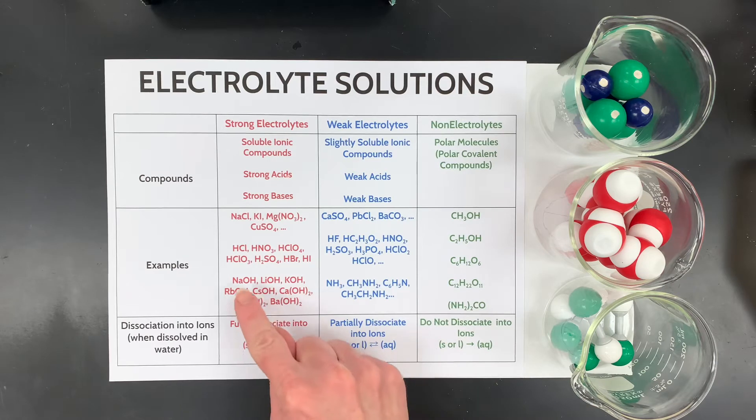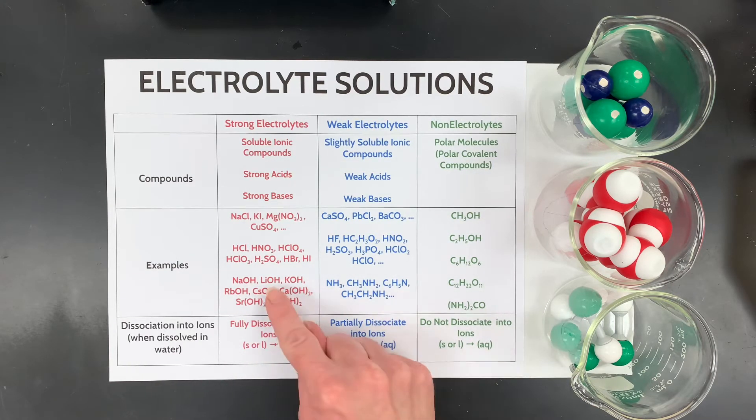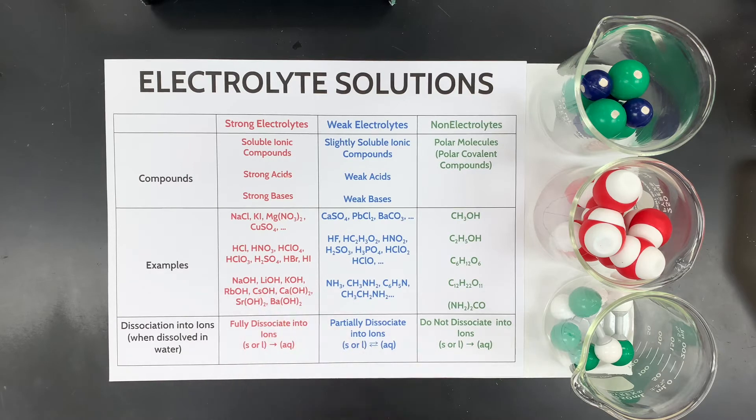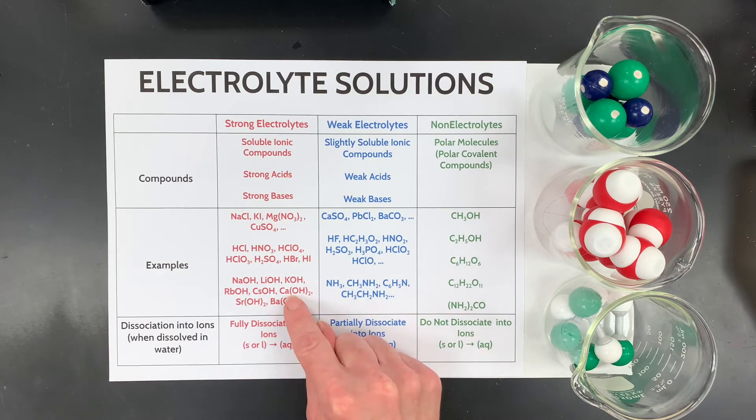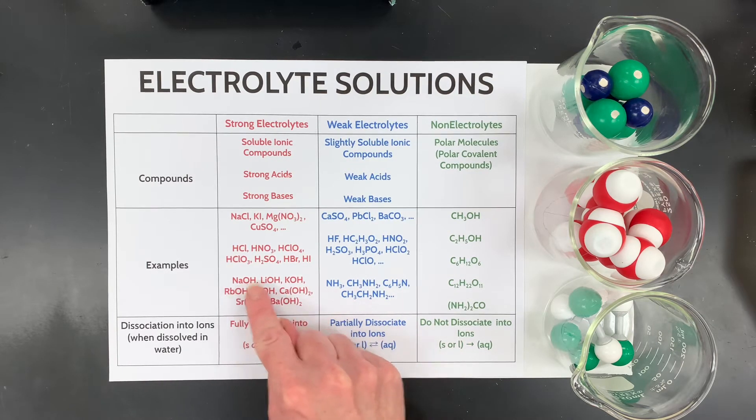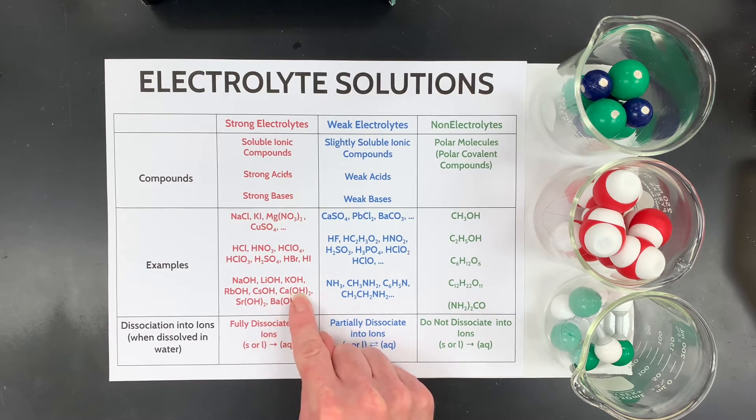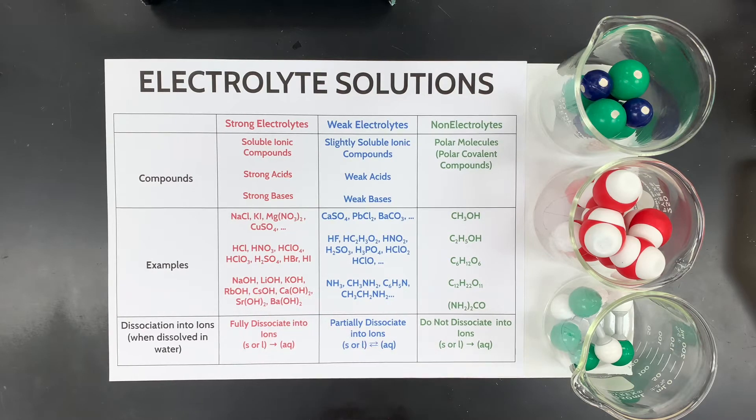All right, next you're going to notice that the alkali and alkaline earth metals make a lot of hydroxides that are listed as strong: sodium hydroxide, lithium hydroxide, potassium hydroxide, rubidium hydroxide, cesium hydroxide, and then a few alkaline earth metals. So these are alkali metals, ions with hydroxide. These are alkaline earth: calcium, strontium, and barium. So it's calcium hydroxide, strontium hydroxide, and barium hydroxide are also some strong bases.